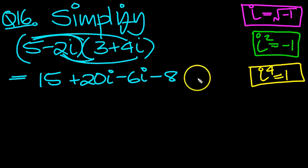We've also got an i times an i, which is i squared, which is minus 1. So that changes to a plus. So it's plus 8.